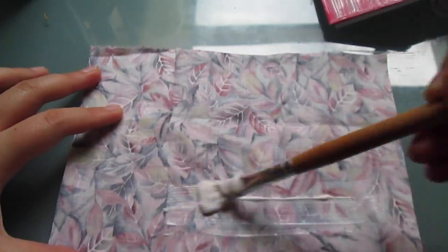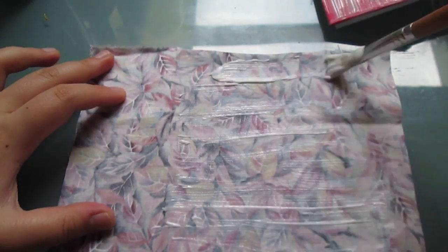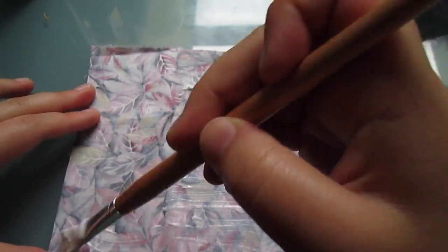Once you've got the Mod Podge all over the outside of your book, go ahead and grab your fabric and do the same thing on the underside of your fabric.